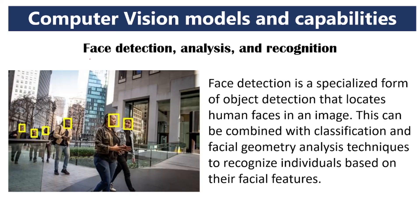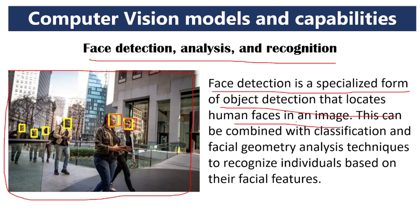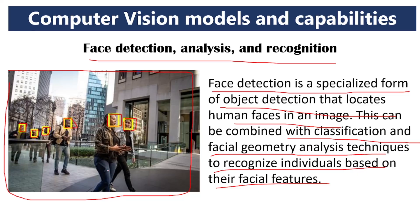Next is face detection, analysis, and recognition. Face detection is a specialized form of object detection that locates human faces in an image. A bounding box is placed around detected faces. Combined with classification and facial geometry analysis techniques, individuals can be recognized based on their facial features. For example, in an attendance system, there is a camera and you show your face; based on your face it gives attendance — face detection is used in that.